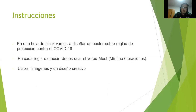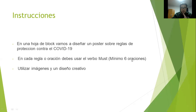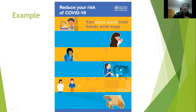Instrucciones: en una hoja de blog, o también puede ser una cartulina, vamos a diseñar este poster con reglas de protección sobre el COVID-19. En cada oración van a usar el verbo must. Mínimo unas seis oraciones. Si quieren hacer más, perfecto. Vamos a utilizar imágenes y un diseño creativo para que quede bonito. Aquí tengo un ejemplo para ustedes, con un diseño colorido e imágenes, y creamos las oraciones usando el verbo must.